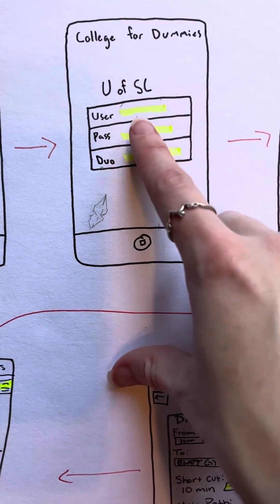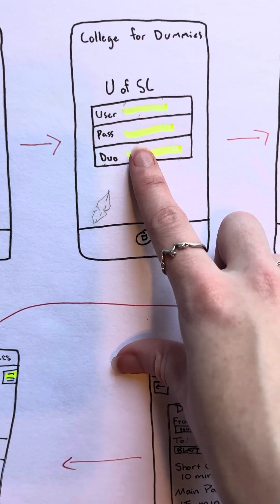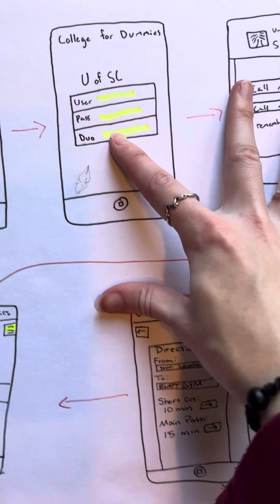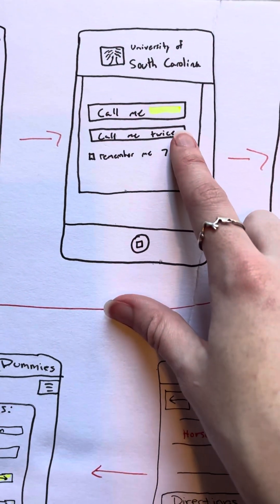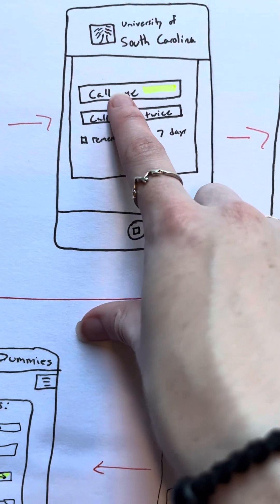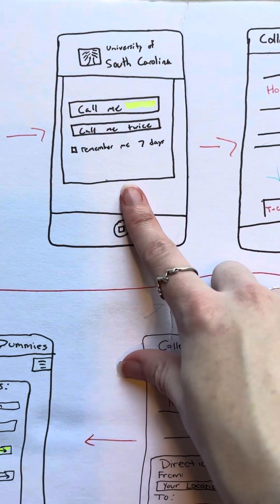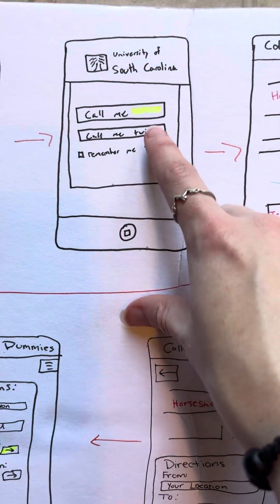From there, it asks you for your username, password, and then your duo login. You of course have to come here, and your only option is to call yourself to get into the app. So why? We're not sure.